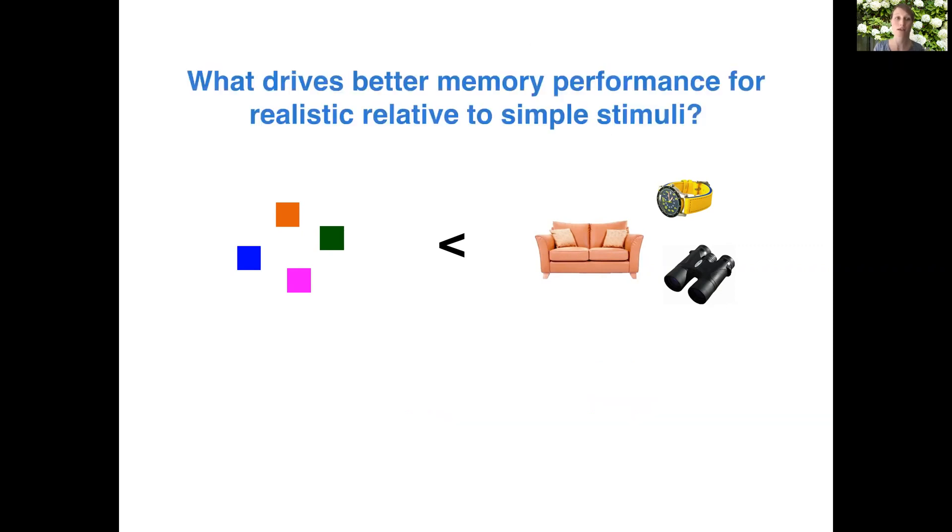Today we want to ask what it is that drives better memory performance for realistic relative to simple stimuli. And we will focus in particular on the limits at encoding, so whether processing of the items initially is the same or different.